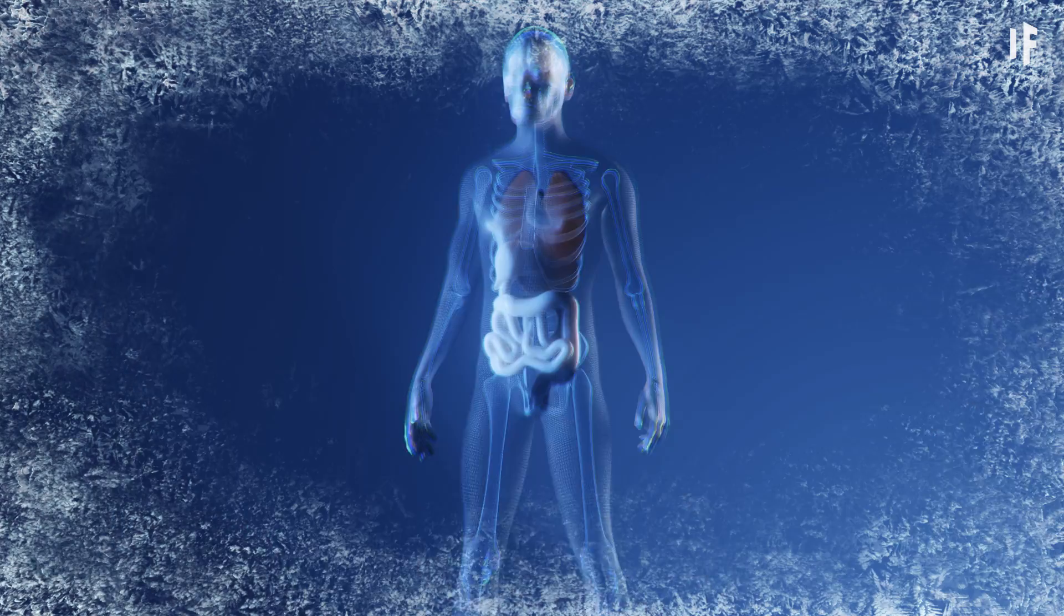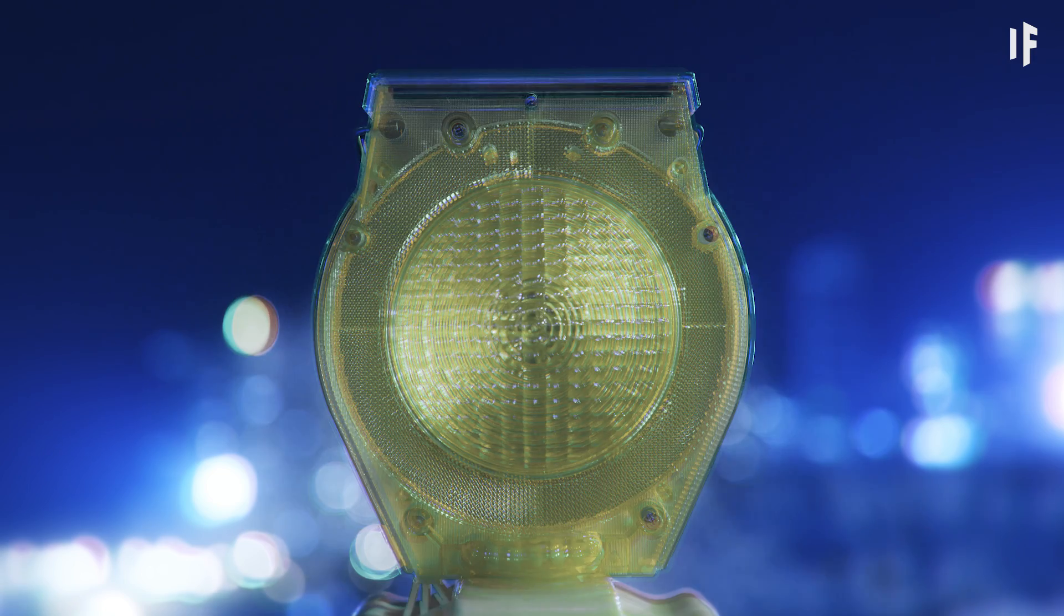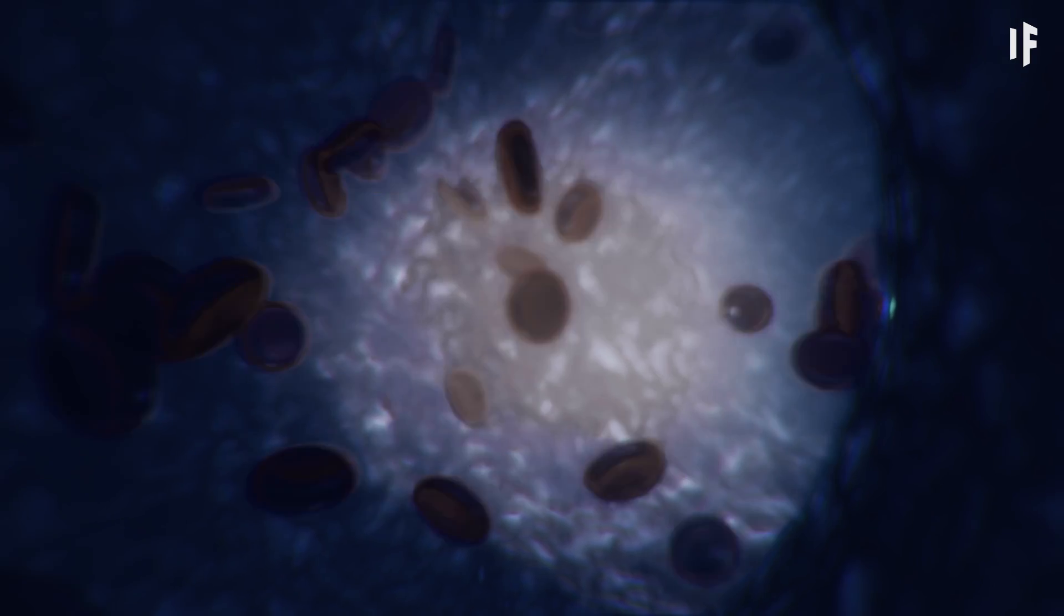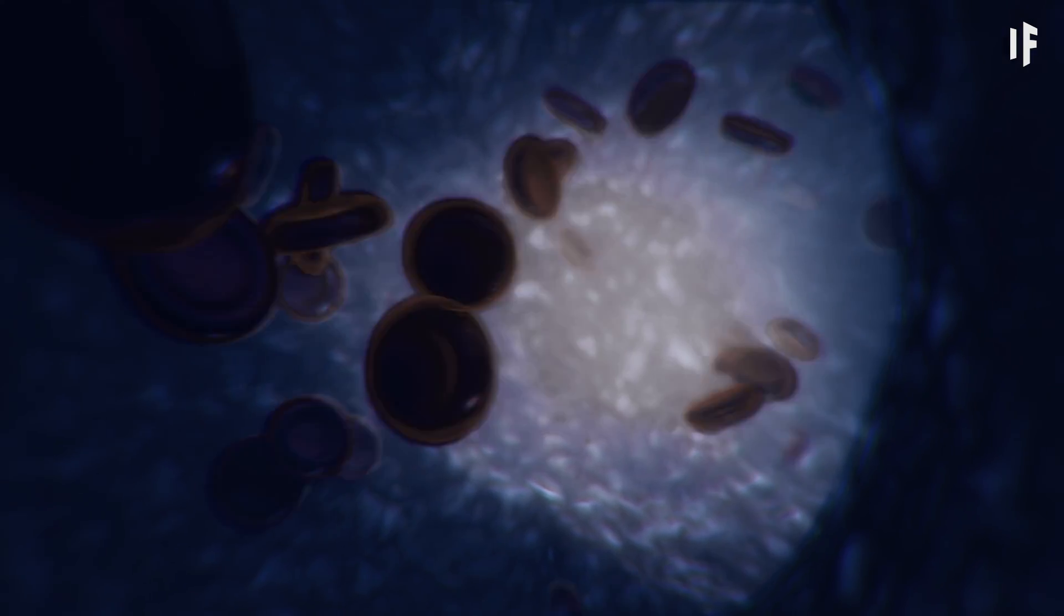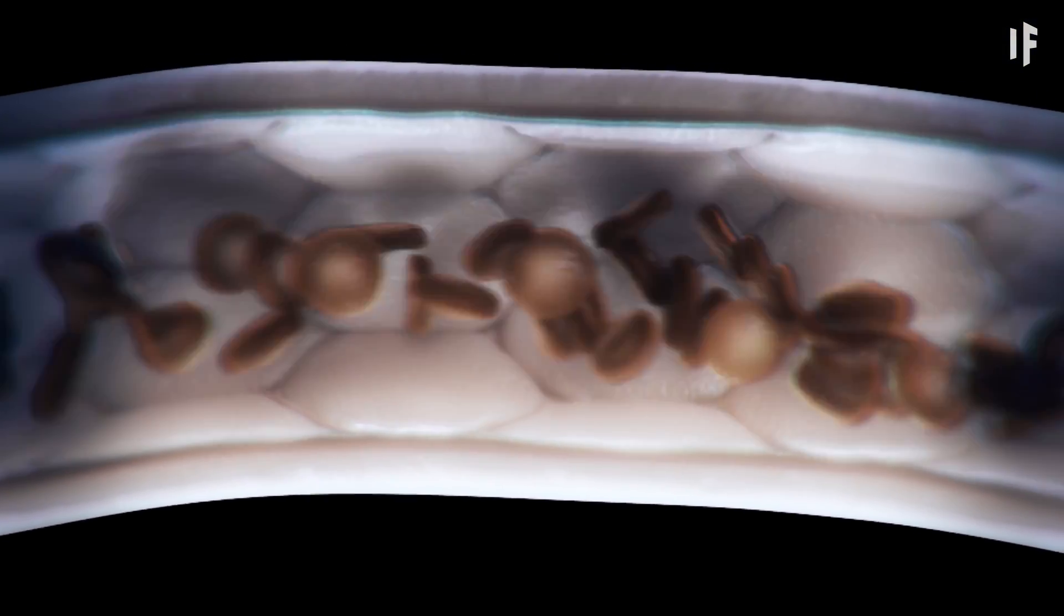Next, blood vessels near your skin will begin to constrict. This will reduce the blood flow to the affected areas and help keep your vital organs alive. It's like your body puts up a roadblock. The problem is, this lack of blood supply and oxygen to your skin can cause damage to your cells.